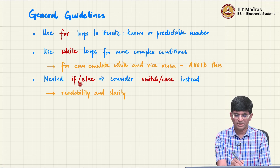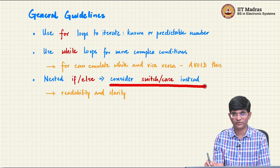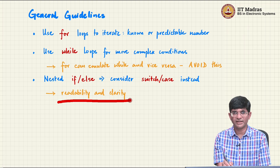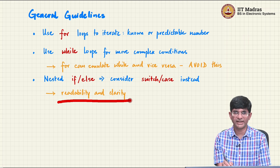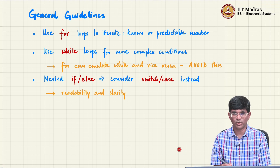Similarly, when you have a nested if-else condition, it is usually a good idea to consider whether a switch-case structure could be used instead — we will look at an example of that later. All of these come down to the same basic idea: the program works and is correct either way. It is more a question of readability, clarity, and how easy it is for somebody else to use and maintain your code later. With that, let us start looking at some examples in a bit more detail, which will hopefully make these concepts clearer.